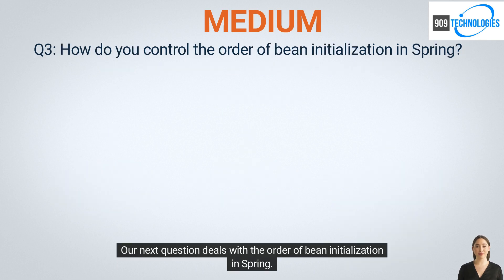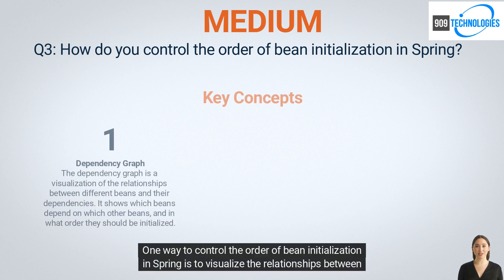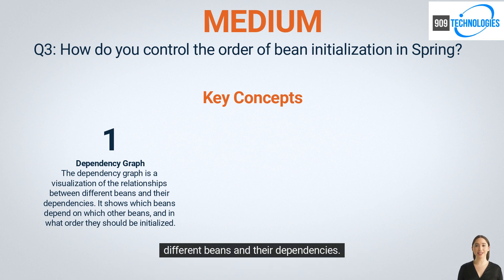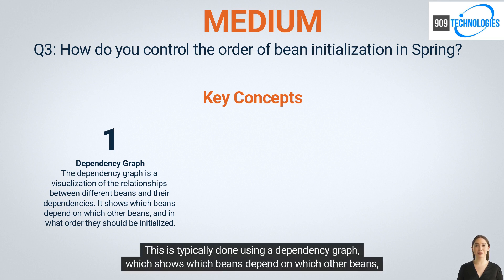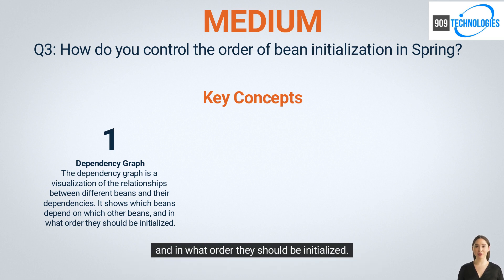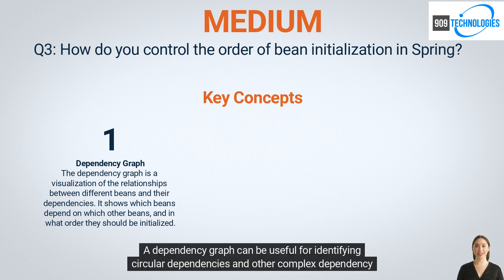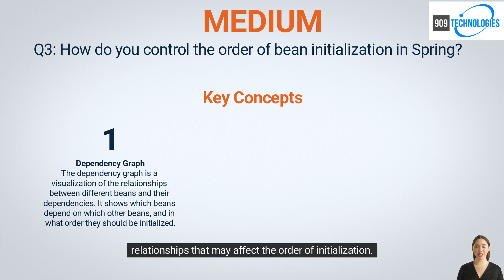Our next question deals with the order of bean initialization in Spring. One way to control the order of bean initialization is to visualize the relationships between different beans and their dependencies using a dependency graph, which shows which beans depend on which other beans and in what order they should be initialized. A dependency graph is useful for identifying circular dependencies and other complex dependency relationships that may affect the order of initialization.